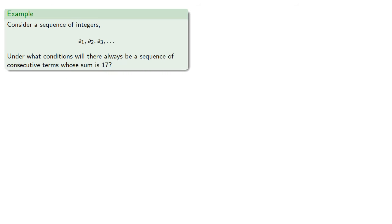Well, let's see if it's possible. Let's consider a sequence of integers, and we'll ask under what conditions will there always be a sequence of consecutive terms whose sum is 17. So a useful strategy: try to avoid it. One way of avoiding having a sum of consecutive terms equal to 17 is to have all of our terms bigger.